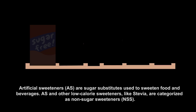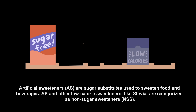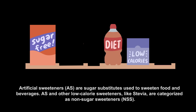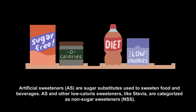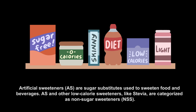Artificial sweeteners are sugar substitutes used to sweeten food and beverages. Artificial sweeteners and other low-calorie sweeteners like stevia are categorised as non-sugar sweeteners.